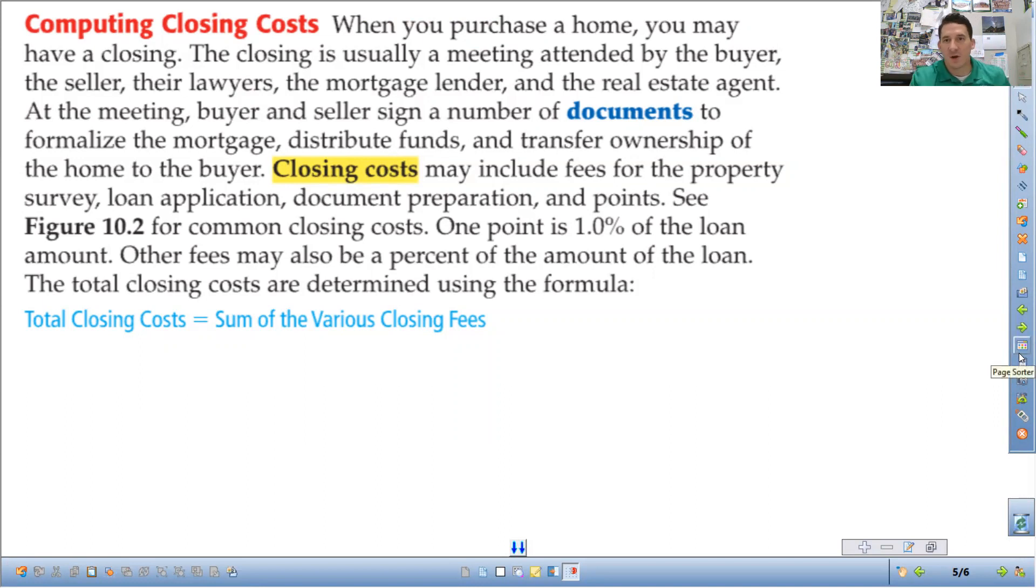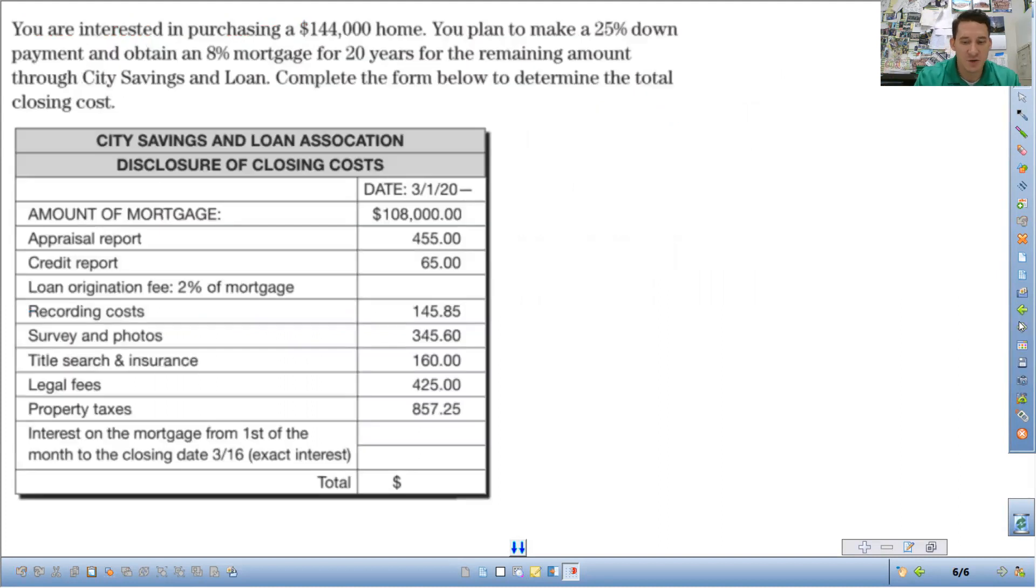And then so the closing costs include a bunch of different things. So let's look at an example of what some of those closing costs could be. So you're interested in purchasing a $144,000 home.